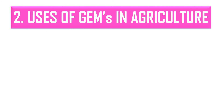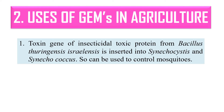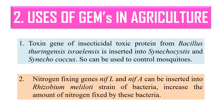The next is the use of genetically engineered microbes in agriculture. In agriculture, we can transfer genes that protect crops from pests or insects. For example, toxin genes from Bacillus thuringiensis can be inserted into Synechocystis and Synechococcus species, which are photosynthetic cyanobacteria. The insecticidal protein produced is highly toxic when ingested by mosquito larvae, so it can be used to control mosquitoes. Similarly, nitrogen-fixing genes NIF-L and NIF-A can be inserted into Rhizobium meliloti, increasing the amount of nitrogen fixed by these bacteria in the soil.